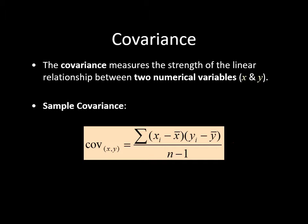If the covariance number is negative, it means the relationship between X and Y is negative — if X moves in one direction, Y moves in the opposite direction. If the number is positive, it means X and Y move in the same direction. However, covariance does not tell you how strong the relationship is.